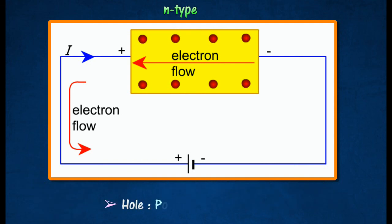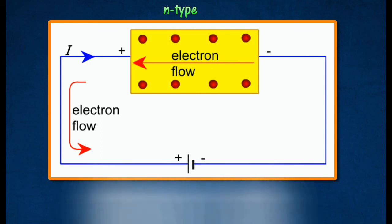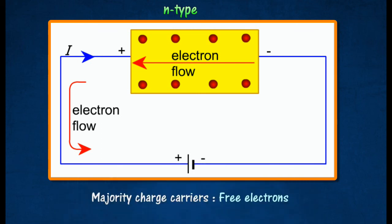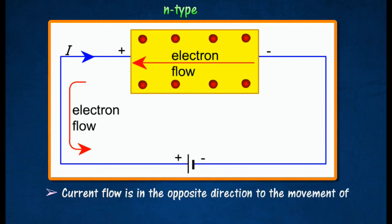The movement of these holes constitutes the positive charge carriers. In N-type semiconductors, current flow is produced largely by movements of free electrons and to a lesser extent, the movement of holes. Current flow is in the opposite direction to the movements of free electrons.